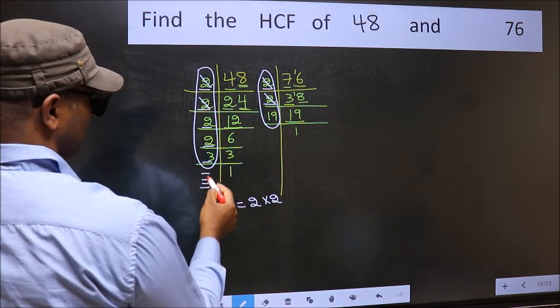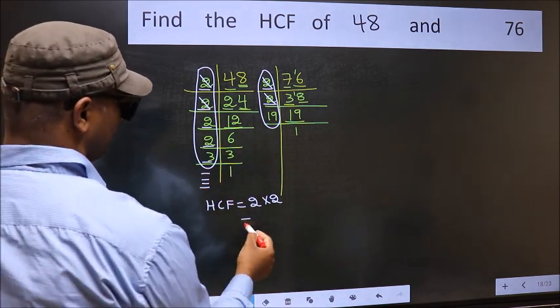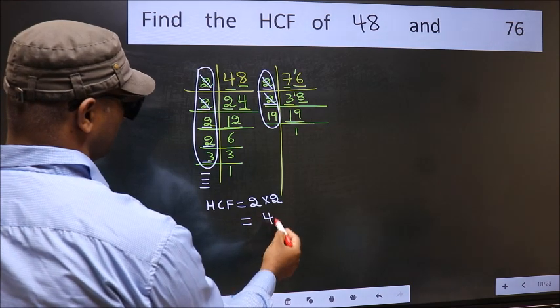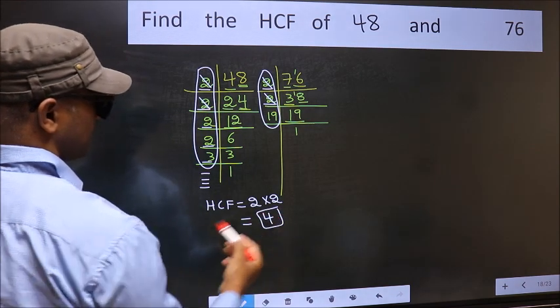No more numbers have been left out. So our HCF is 2 into 2, 4 is our HCF.